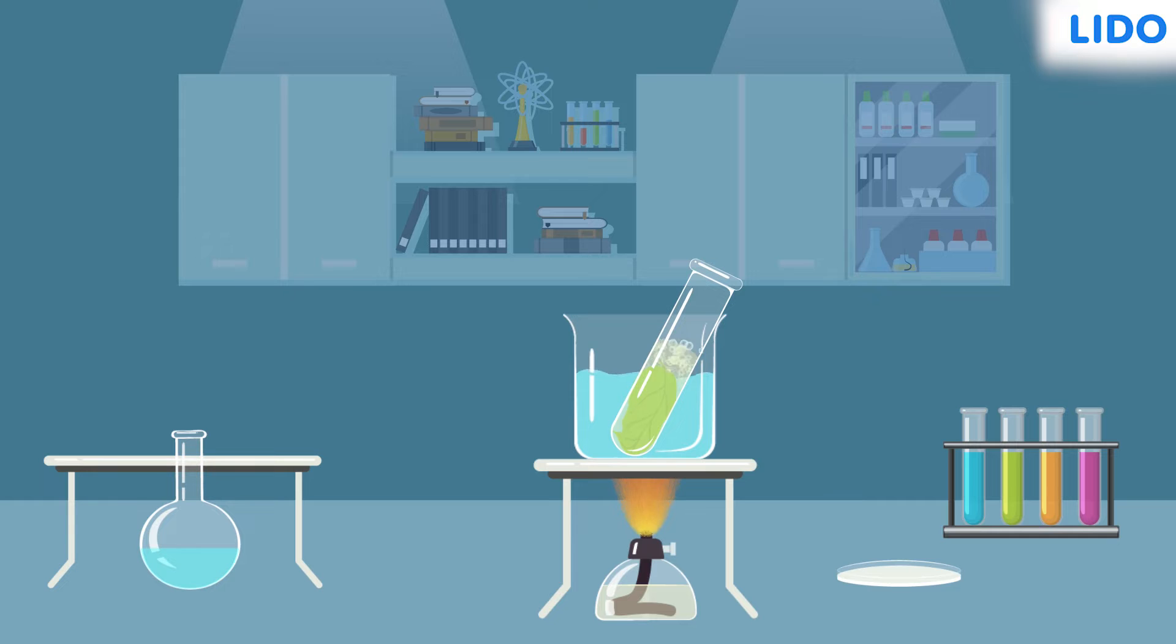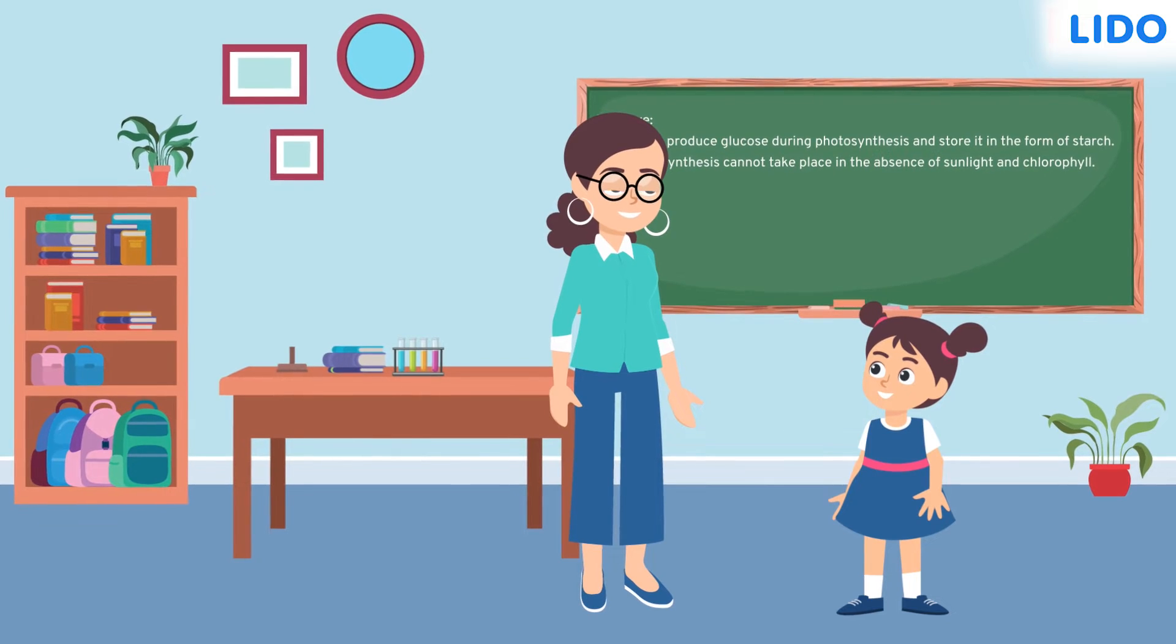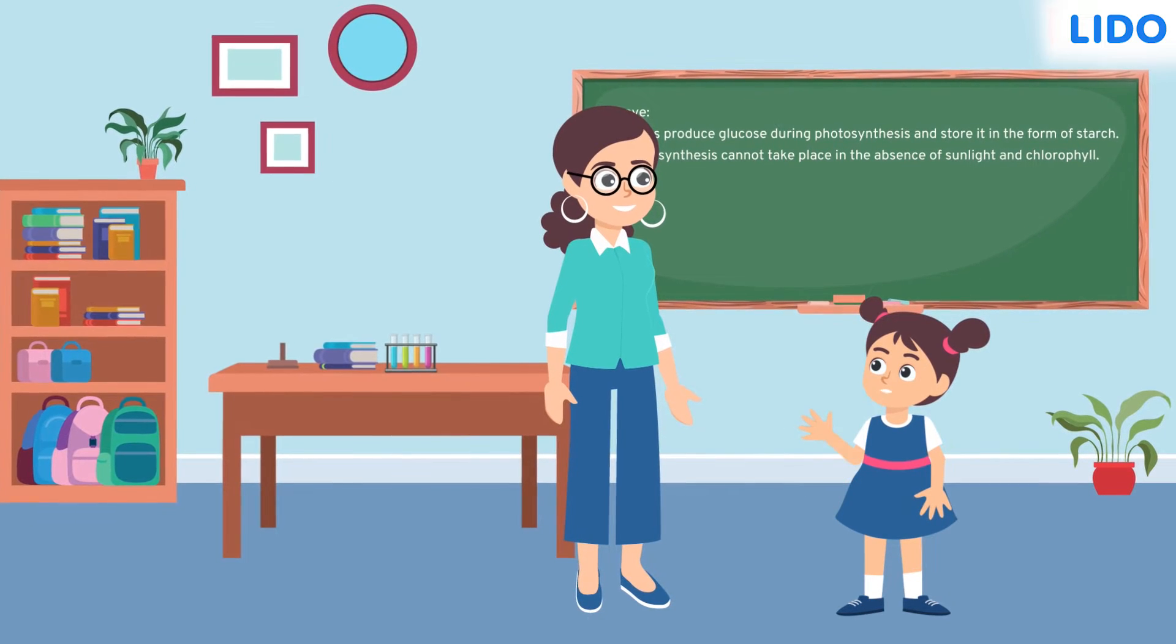When the water started boiling, the leaf began losing its green colour. Amazed, Sapna asked her teacher why this was happening.